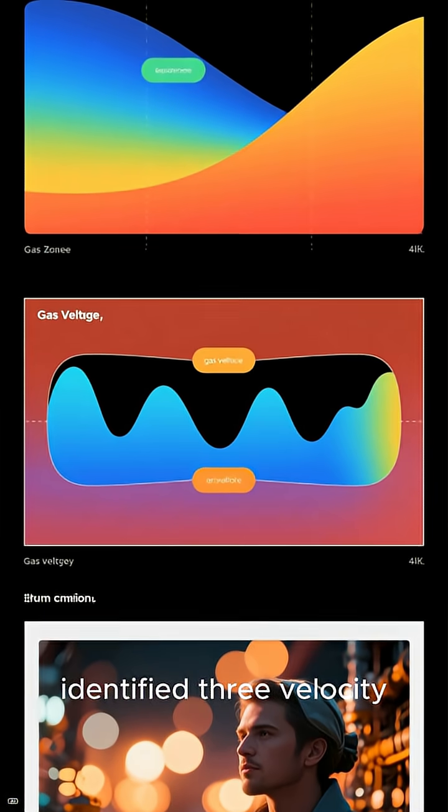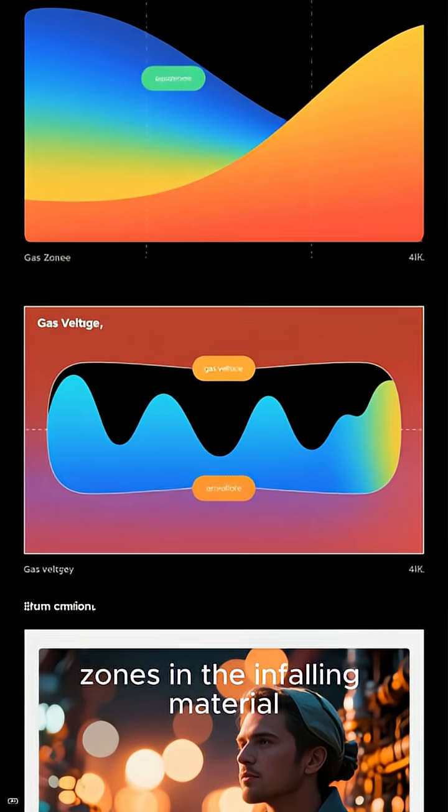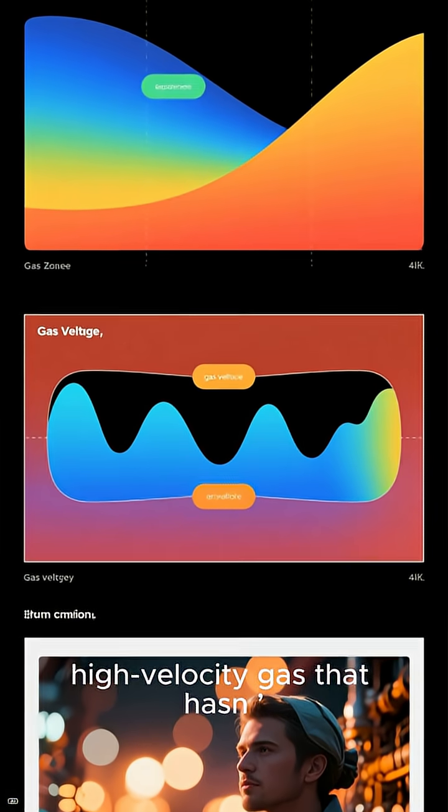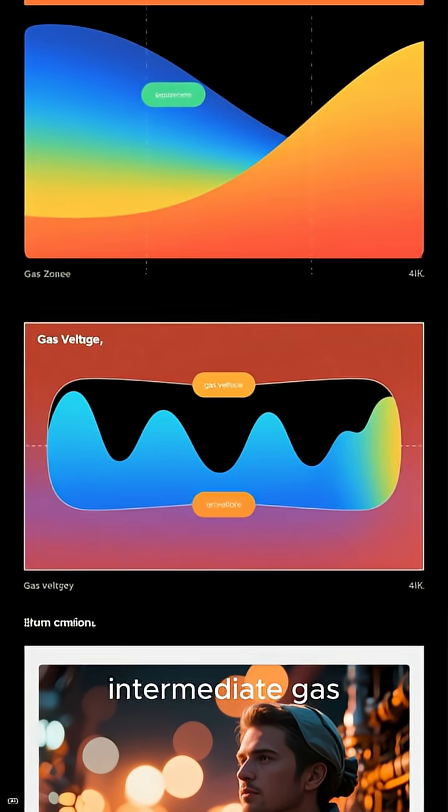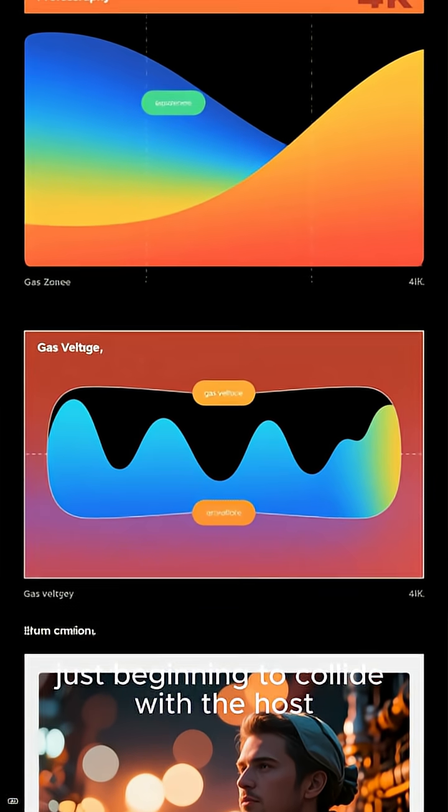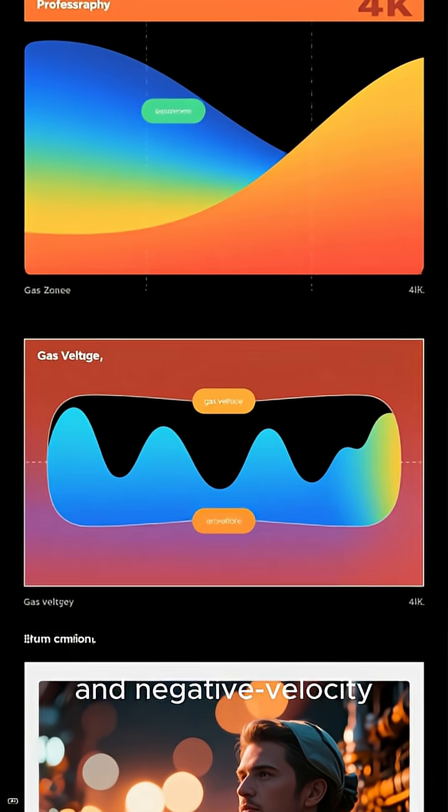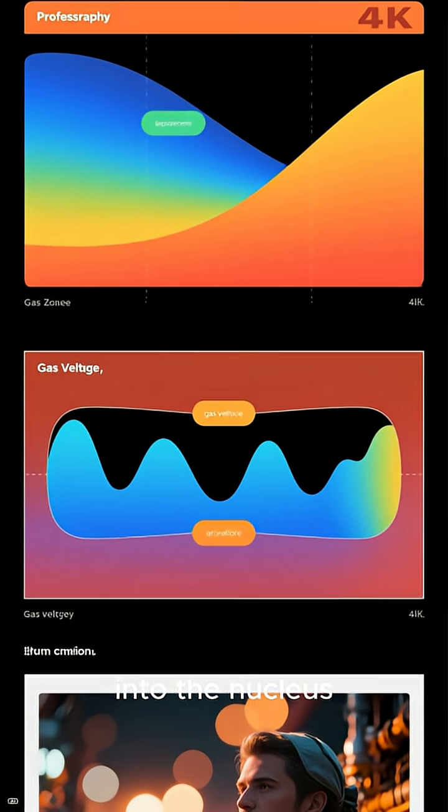Astronomers even identified three velocity zones in the infalling material: high-velocity gas that hasn't interacted yet, intermediate gas just beginning to collide with the host galaxy, and negative velocity gas that has already crashed into the nucleus.